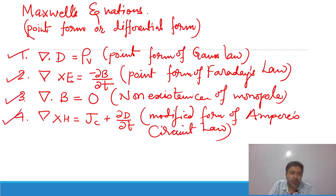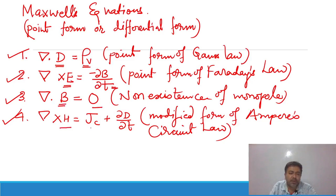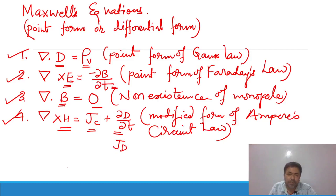The first equation states that the divergence of electric flux density equals the volume charge density. The second equation states the curl of the electric field intensity equals the negative rate of change of magnetic flux density. The third equation states the divergence of magnetic flux density is zero. The fourth equation states the curl of magnetic field intensity equals conduction current density plus displacement current density, where Jd = ∂D/∂t. These four are Maxwell's equations.